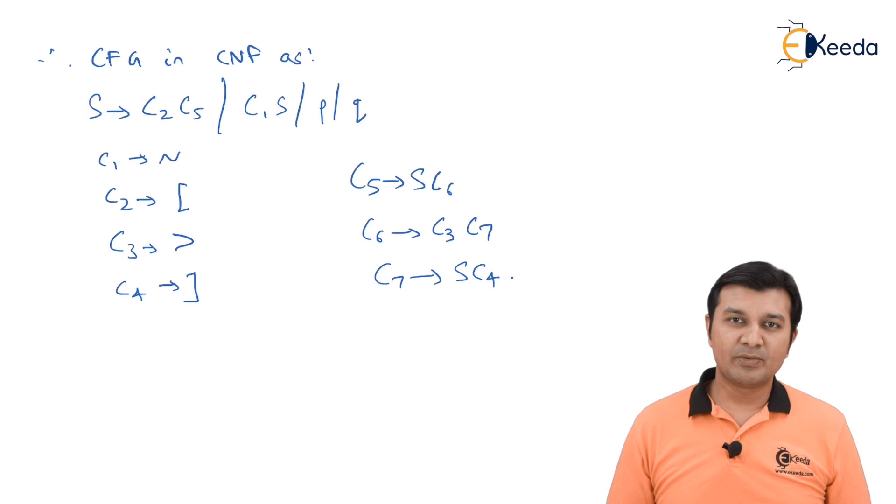And lastly my C7 gives me S C4. With this, we complete with this problem 2 where we are getting a CFG converted to CNF. Thank you.